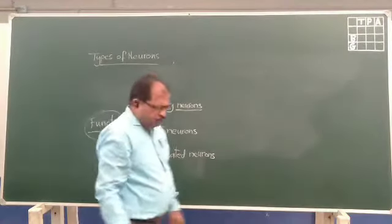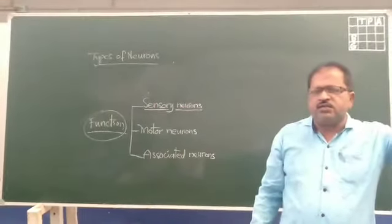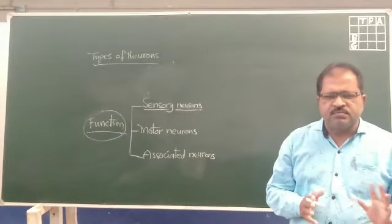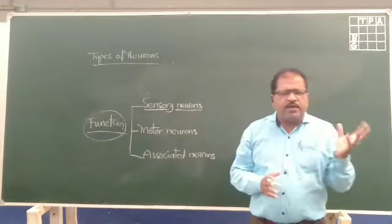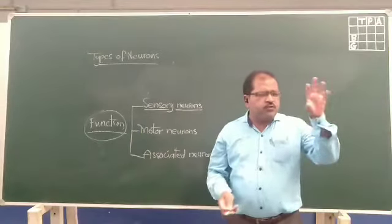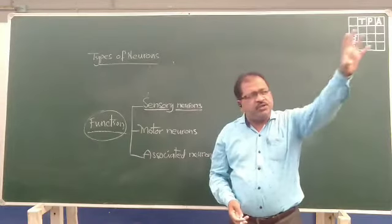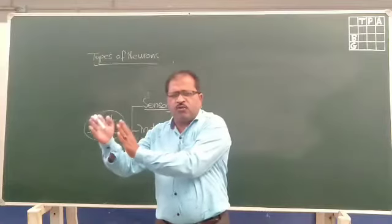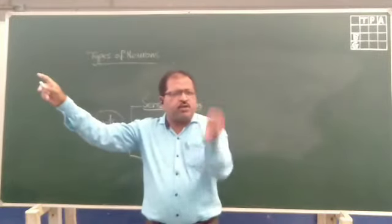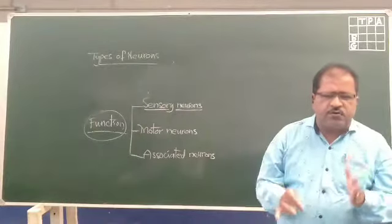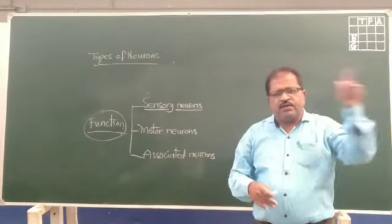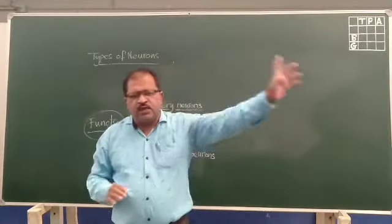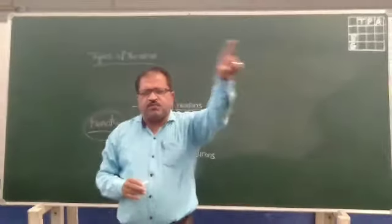Sensory neurons are connected to the sensory organs — we have five sensory organs: eyes, ears, nose, tongue, and skin. These five sensory organs are connected with specialized neurons called sensory neurons. Sensory neurons collect information from the sensory organs and send it to the particular center of the brain. This is the function of sensory neurons: taking information from the sensory organs to the brain.